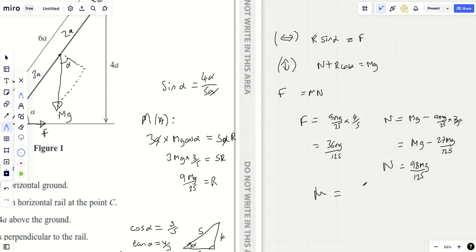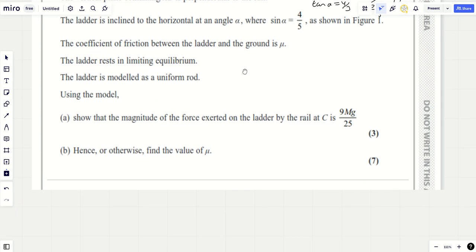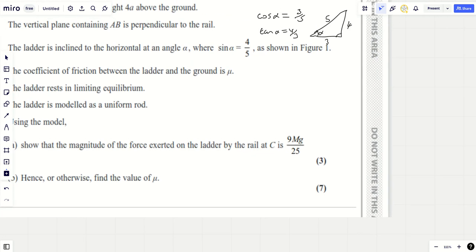What is mu? Mu is going to be equal to f over n. So the 125s cancel, the mgs cancel, and you're left with 36 over 98, which is the same as 18 over 49. And so that is mu in exact form. I'm just going to quickly check my answer because these things can go wrong.